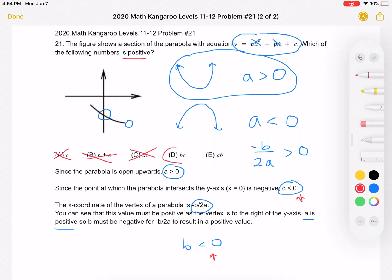For choice e, we have a times b. Again, a positive number times a negative number gives us a negative product. So our correct answer is answer choice d, b times c.